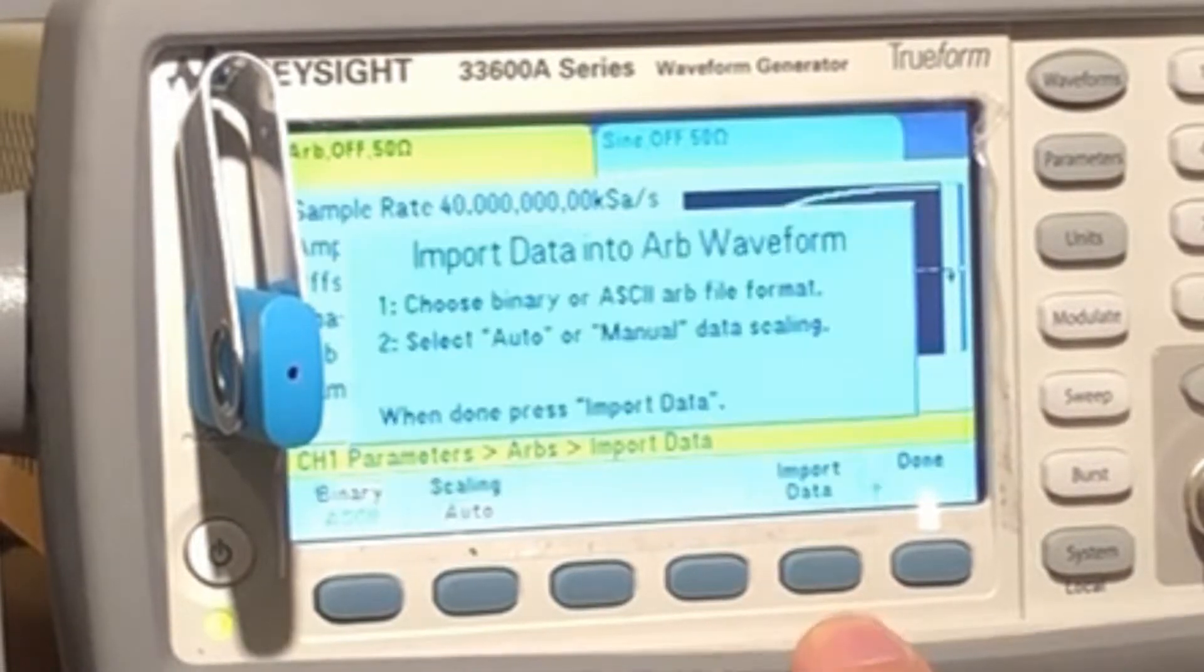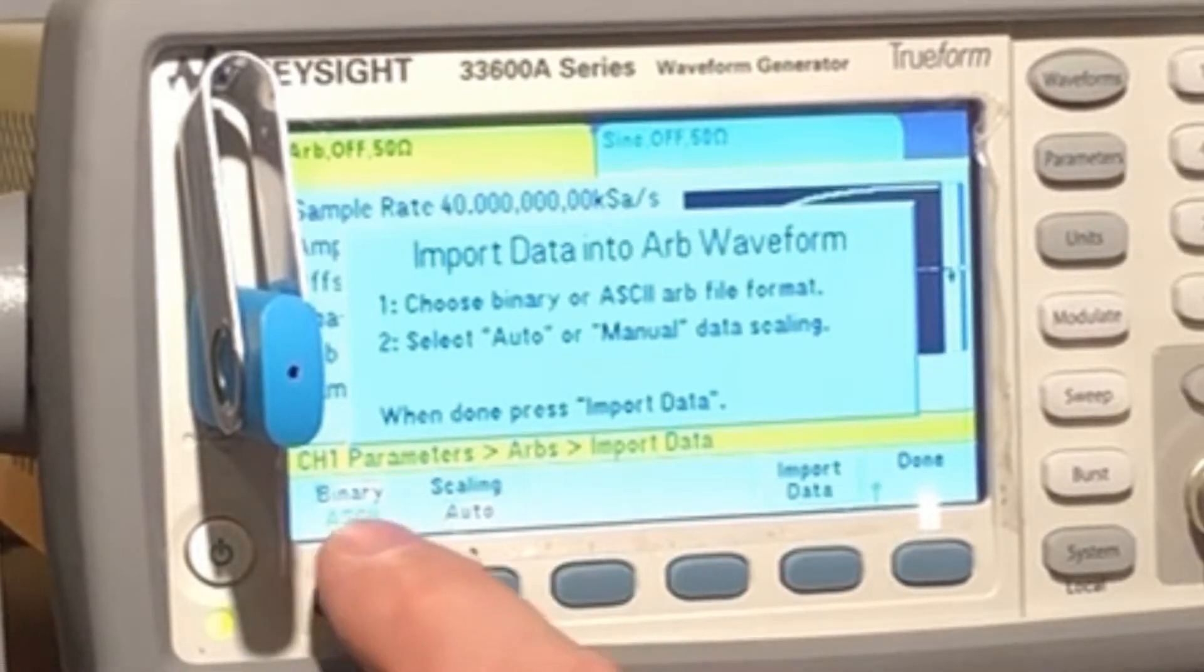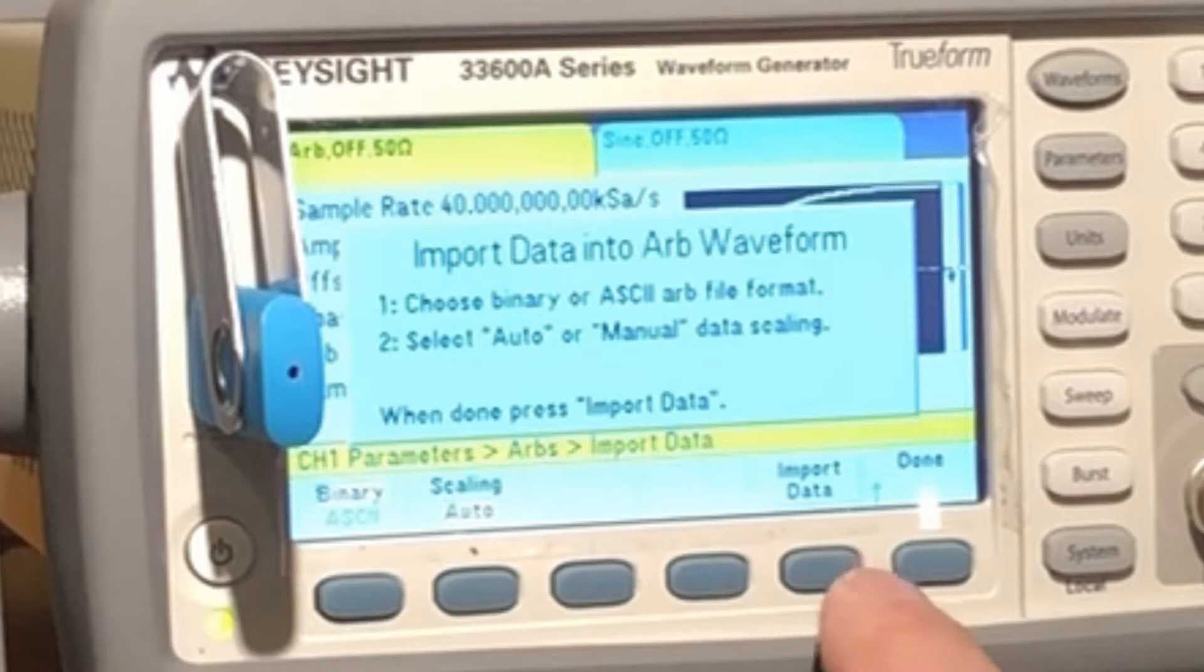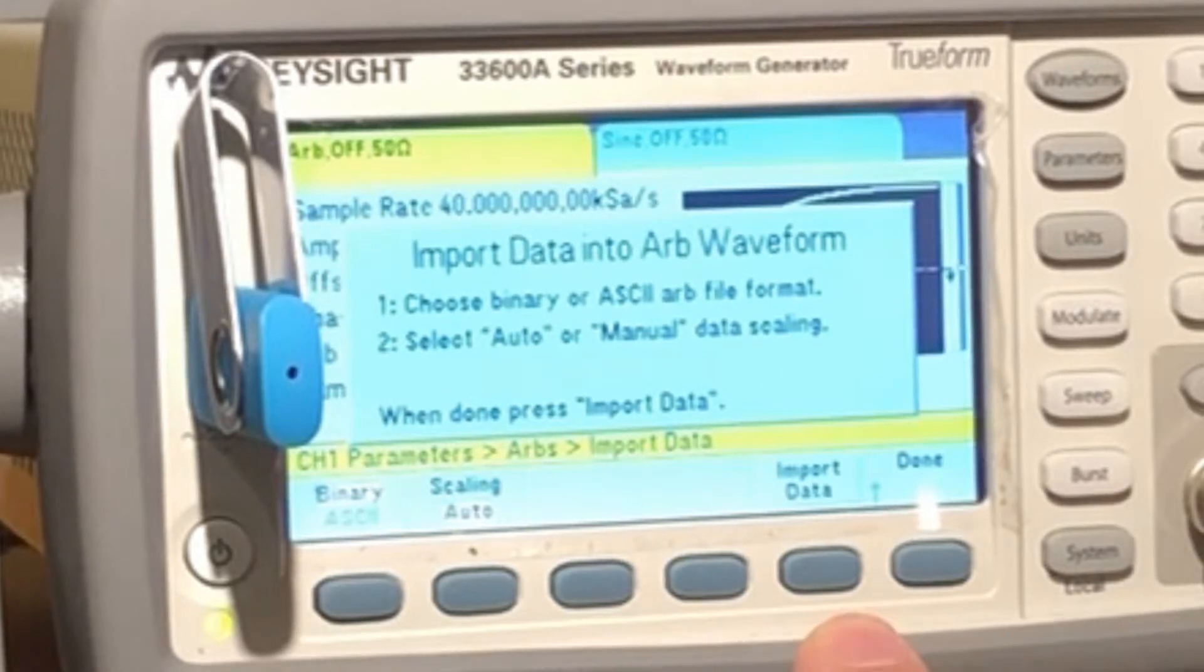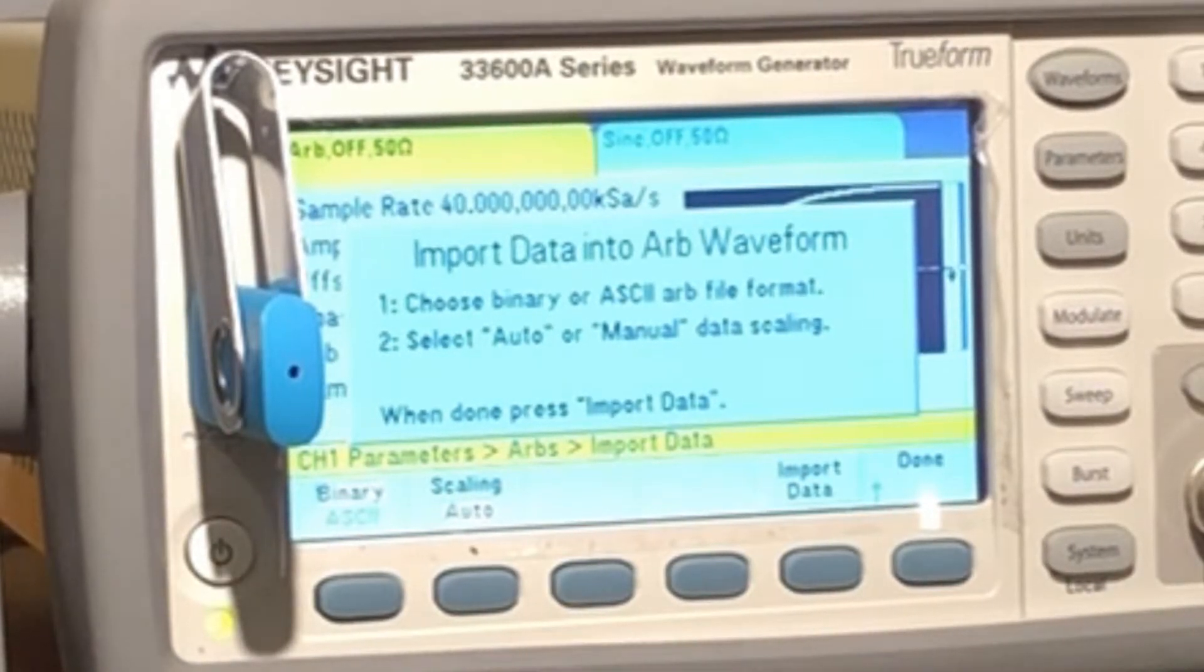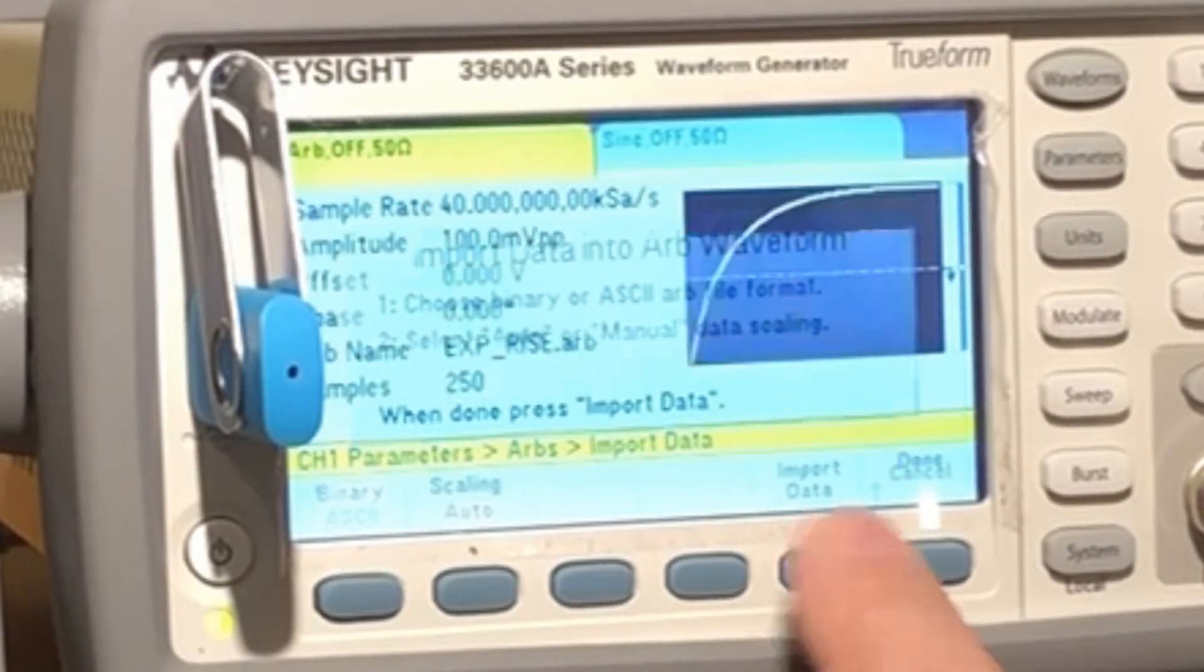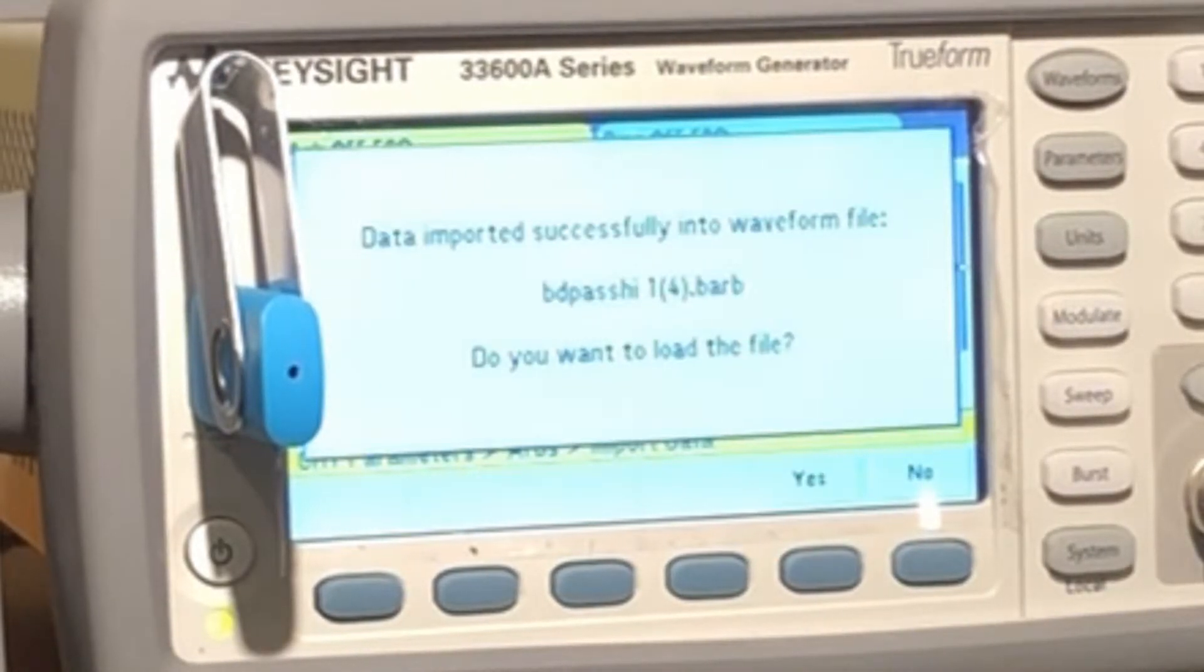So this is binary auto import data. I'm going to do auto scaling to use up the DAC properly, get the best dynamic range, and I'm going to select import data. Do you want to load the file to someone, wants to load it to the ARBS, say yes.